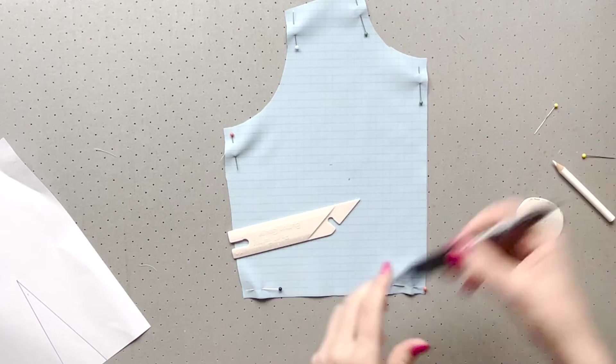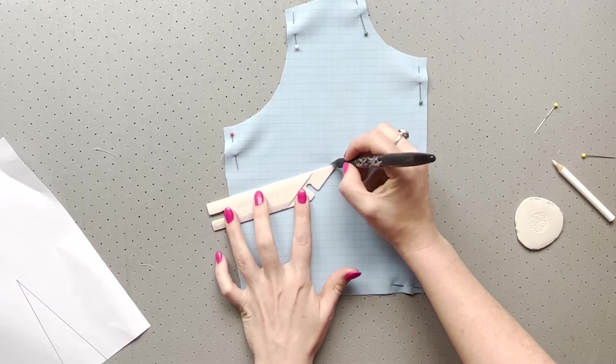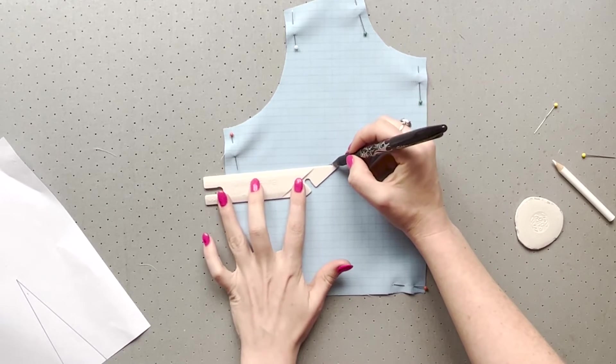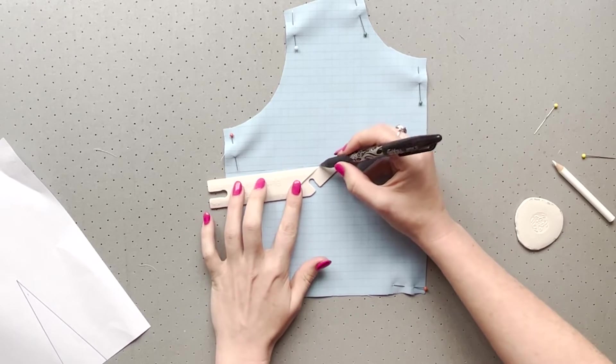Whilst learning, you can take a ruler, your fabric marker and connect the points with a straight line. This will give you a path to follow whilst sewing.